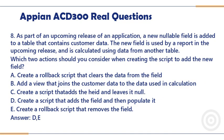Question 8. As part of an upcoming release of an application, a new nullable field is added to a table that contains customer data. The new field is used by a report in the upcoming release, and is calculated using data from another table. Which two actions should you consider when creating the script to add the new field? A. Create a rollback script that clears the data from the field. B. Add a view that joins the customer data to the data used in calculation. C. Create a script that adds the field and leaves it null. D. Create a script that adds the field and then populates it. E. Create a rollback script that removes the field.